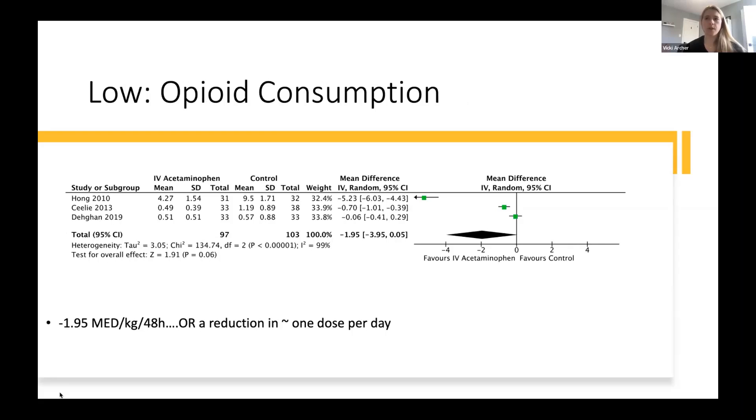Our next outcome was opioid consumption. Here we have low-quality evidence demonstrating reduction in opioid consumption when IV acetaminophen is added to opioid-based pain regimes. We found a reduction of 1.95 morphine-equivalent doses per kilogram per 48 hours. More practically, what that means is about a reduction of one dose a day. Using thresholds from trials in this topic, we wanted to see a reduction of at least 30%, which we did see with our result. Both in the effect estimate and the lower end of the confidence interval. The upper end of the confidence interval does cross a line of no difference, but does not include harm.